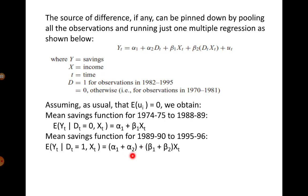In this equation, alpha 2 — the coefficient of the dummy variable — is the differential intercept term, and beta 2 is the differential slope term. Alpha 2 tells us by how much the intercept has changed from the pre-liberalization period: in pre-liberalization the intercept is alpha 1, and post-liberalization it changes by plus alpha 2. Similarly, the slope pre-liberalization is beta 1, and post-liberalization the slope changes by a value of plus beta 2, which is known as the differential slope coefficient.